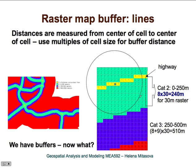These distances are measured from the center of one cell to the center of another cell. That means the raster resolution defines the step at which we can create these buffer zones.